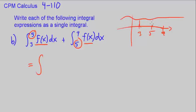3 to 5 is just the area under the curve from 3 to 5. 5 to 9 is from 5 to 9, so combining it is just going to be from 3 to 9. Same function, dx.